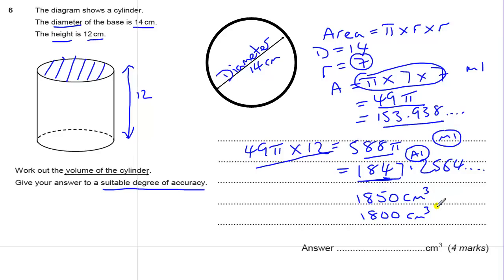And then the rounding mark, which is a B1 mark, which means they've just seen the answer, and nothing else. So 4 marks.